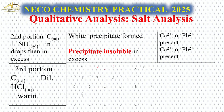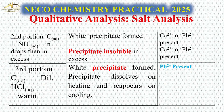Take another portion and react it with ammonia, both in drops and in excess. You'll have a white precipitate form. Now we can knock out zinc because zinc is soluble in ammonia, but Pb²⁺ is not soluble in ammonia, and calcium is also not very soluble.